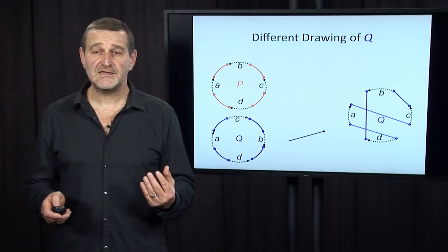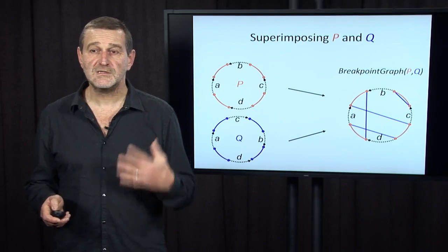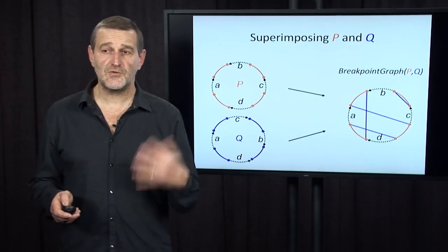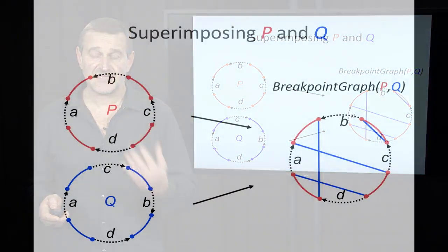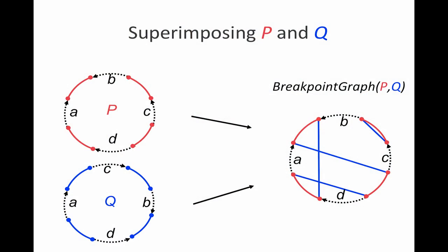As soon as we've done it, we can superimpose genome P over genome Q because black edges are arranged identically. And we'll get something that is called the breakpoint graph. Let's learn a few things about the breakpoint graph.